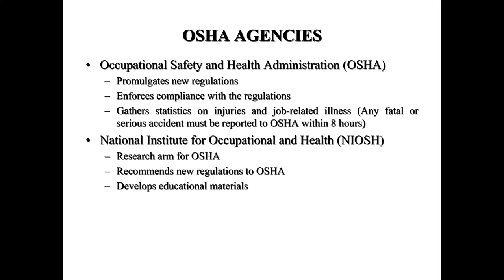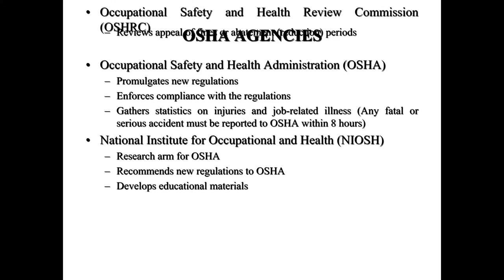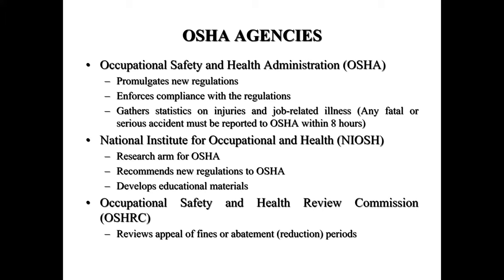The second organization linked with OSHA is NIOSH — the National Institute for Occupational Safety and Health. This is the research arm of OSHA and they recommend new regulations, provide funding, and develop educational materials for safety. The third organization is the Occupational Safety and Health Review Commission, which considers appeals from contractors related to fines or abatement. People can make an appeal within 15 days of an inspection for reduction in fines.